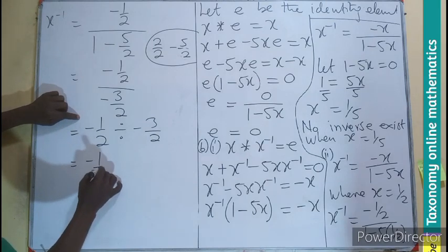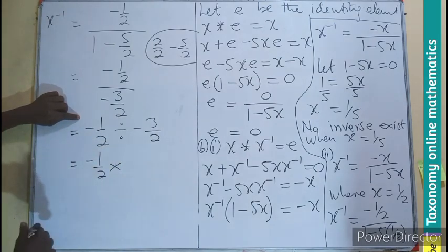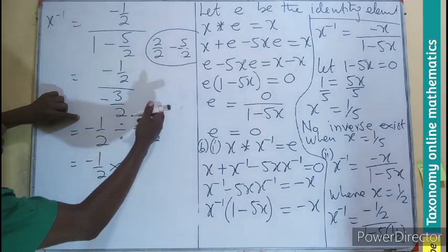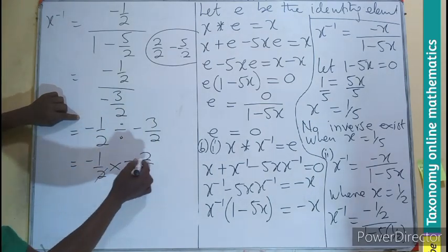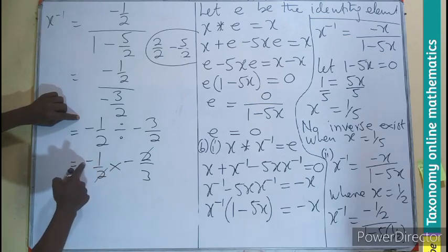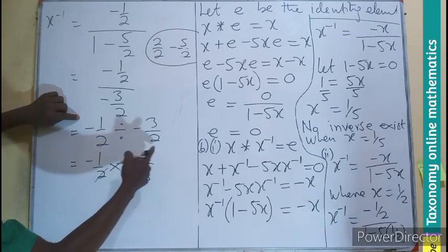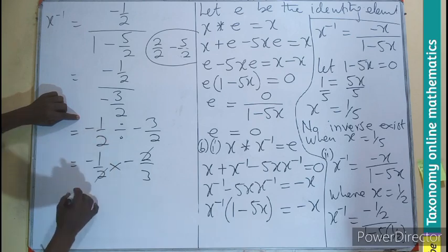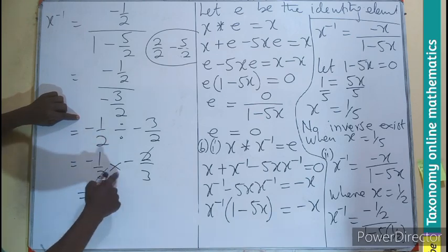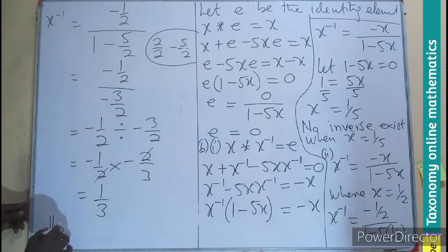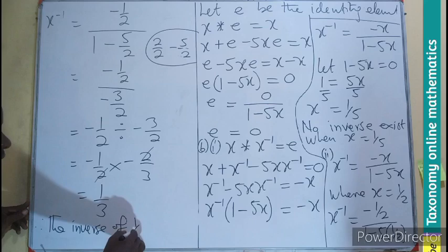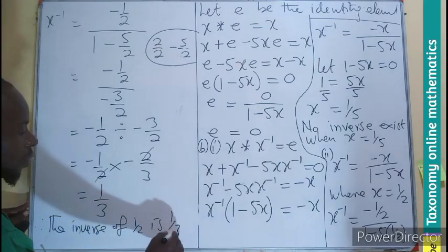So now we have double division, which is minus half divided by minus 3 over 2. We can see that minus half will be multiplication, changing this. We reciprocate this, so minus 2 over 3. This will cancel, and I will be left with negative 1 times negative 1, which is positive 1. 1 times 3, that will be 3. Therefore, the inverse of half is one-third.